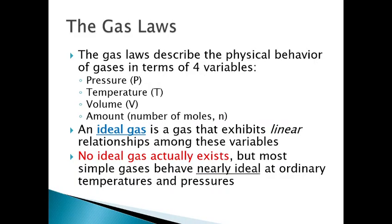These gas laws describe the physical properties of gases in terms of four variables: pressure, temperature, volume, and the amount in moles. An ideal gas is a gas that displays a linear relationship between these four variables, meaning if you increase the pressure, you'll have some relationship that changes the temperature or volume. These changes occur in a perfectly linear relationship — you won't have an exponential change in temperature when you change the pressure.